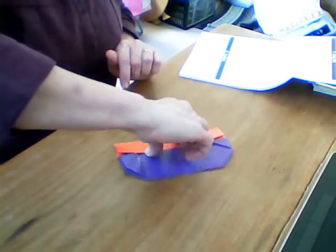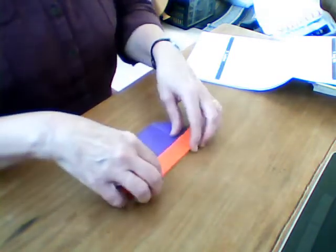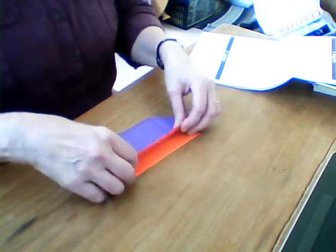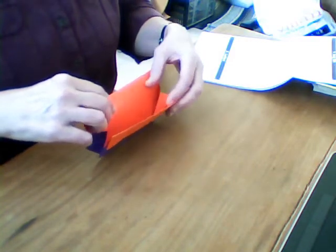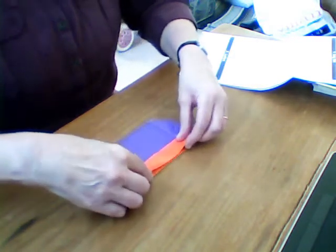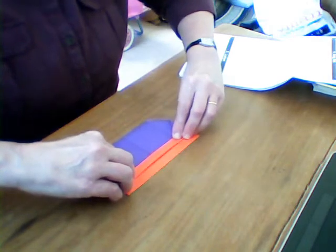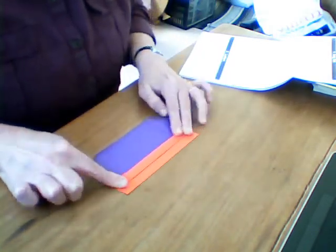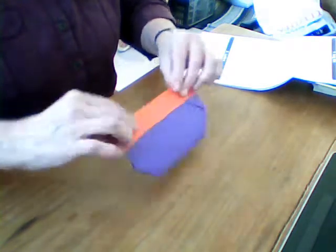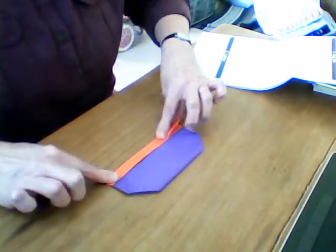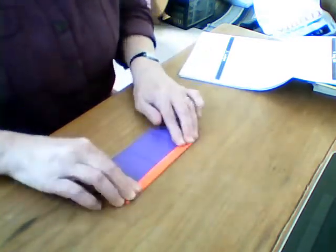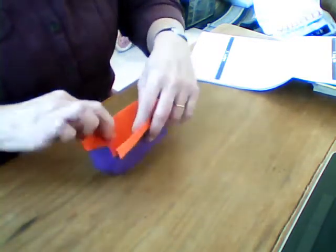You twizzle it round so you've got openings opposite you now instead of... okay, now you simply, do you want to do that first? Yeah, so you now fold up again so that the edges are going to be nice and firm, so you've doubled up those folds.